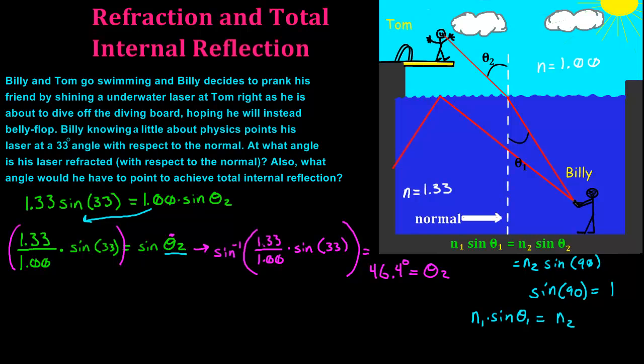So when we do that, let's write this over here. We've got N1, which we said was 1.33 times sine theta1, and we don't know that. This is what we are trying to figure out, what angle he would have to point to achieve total internal reflection. So sine theta1 is going to equal N2, which is 1.00.